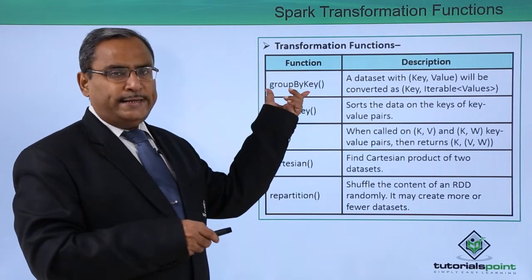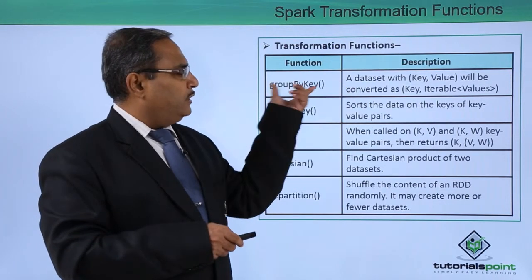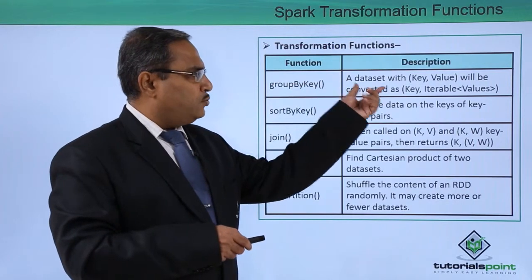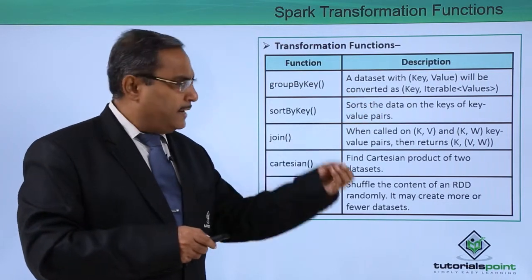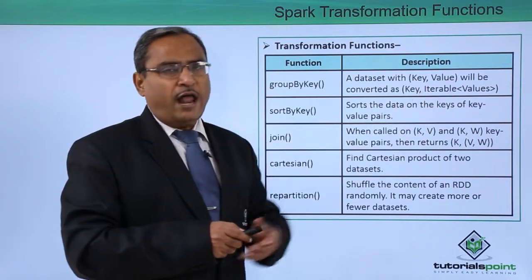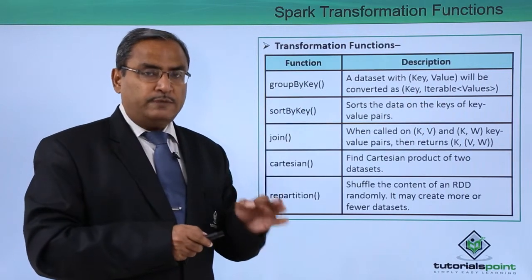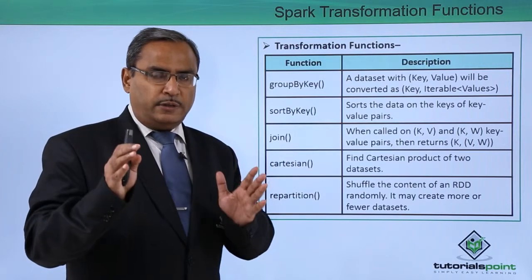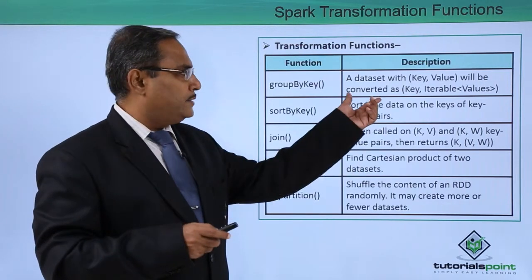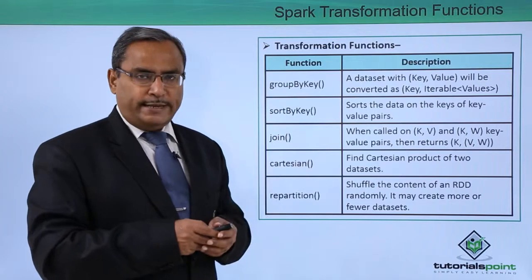Group by key method. This particular function is that a dataset with key value pair will be converted to key and then iterable values because it is a group by key. The key will be there, and for the same key that iterable on the values will be obtained in case of group by key method.